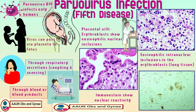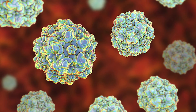Erythroblasts show eosinophilic nuclear inclusions. Immune stains show nuclear reactivity in lung tissue. Eosinophilic intranuclear inclusions in erythroblasts are seen. Parvovirus B19 infection during pregnancy is mostly asymptomatic.